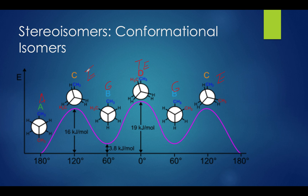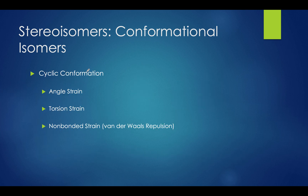Now that we understand straight chain conformations, let's move on to cyclic conformations. Cyclic conformations are based on different types of ring strains. Angle strain is when bond angles deviate from their ideals by being stretched or compressed. Torsional strain is when cyclic molecules must assume gauche or eclipsed interactions, forcing stress due to bulky groups being closer to each other. Lastly, non-bonded strain, also known as Van der Waals repulsion, is when non-adjacent atoms compete for the same space, and is the dominant source of steric strain in flagpole interactions of the boat conformation.